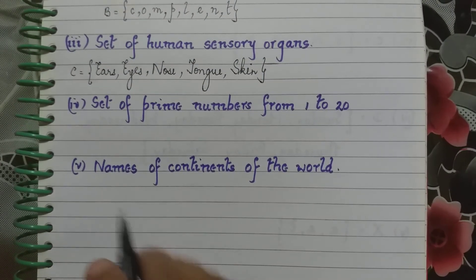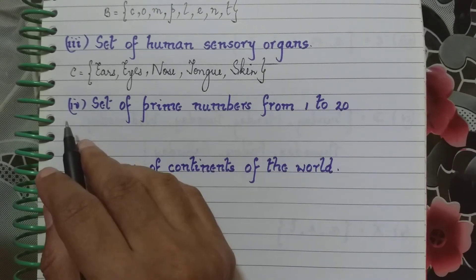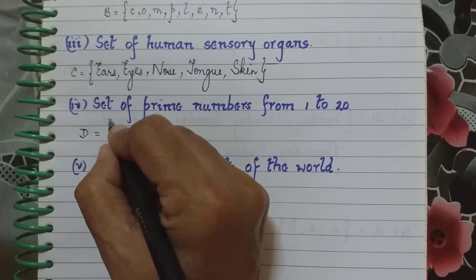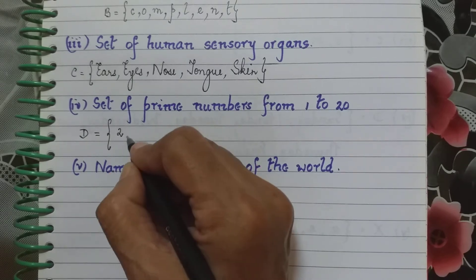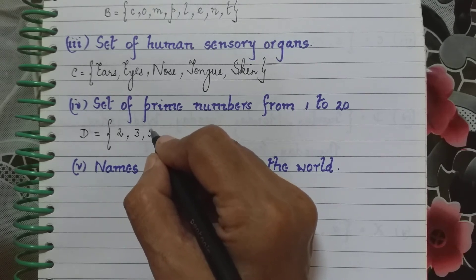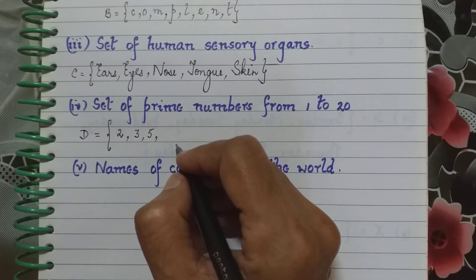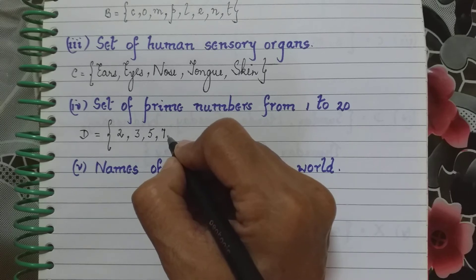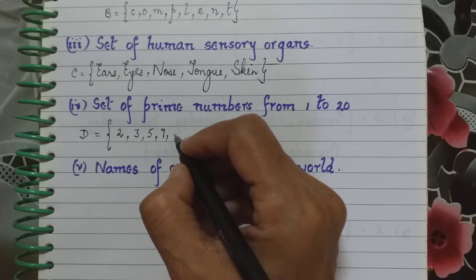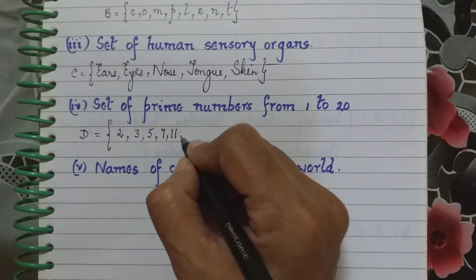Now coming to the fourth one, that is the set of prime numbers from 1 to 20. Again let us name the set first, say suppose I name it as D, is equal to the first prime number is 2. After 2 we have 3. 4 is not a prime number. Next prime number is 5. 6 is not a prime number, 2 and 3, 2 and 4 are divisors of 6. So next will be 7. 8 is not a prime number, 2 and 4 are divisors of 8. 9, 3 goes in it. Not even 10, 2 and 5 go in it. Next will be 11.